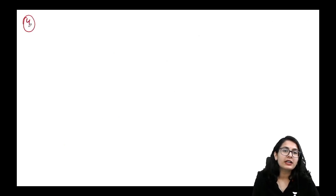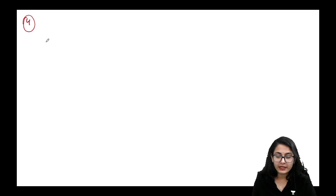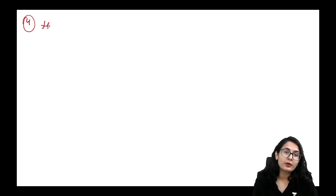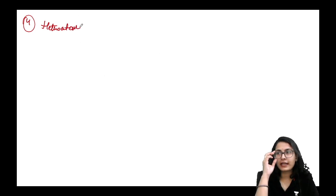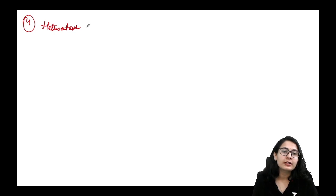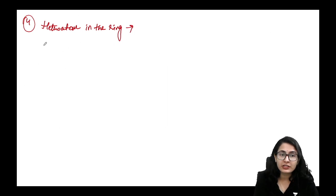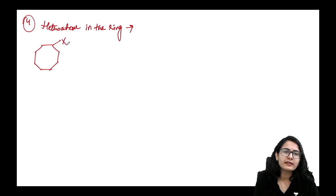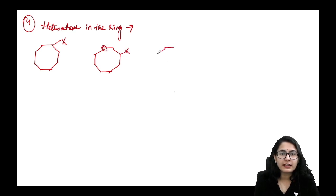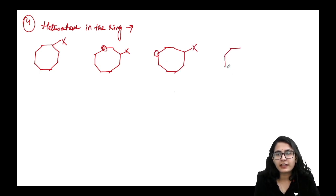The fourth type of NGP involves heteroatoms. Halogens and oxygen can perform NGP. Importantly, an oxygen atom in the ring can also do NGP — but does NGP always increase the rate of reaction? Let's examine three molecules with oxygen positioned at different distances from the leaving group.